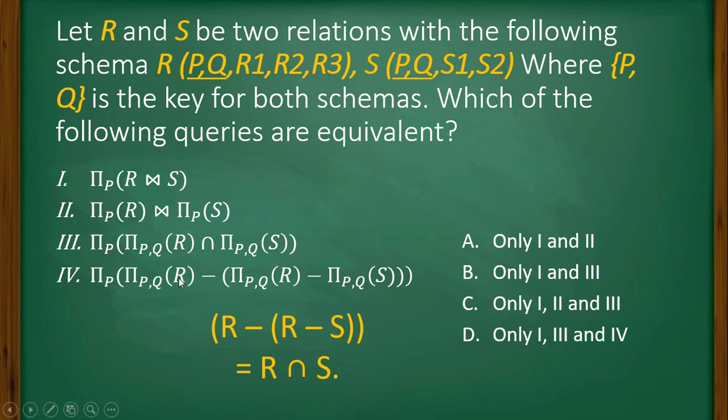So this looks like R minus, in bracket, R minus S. Now as per rule, this is equivalent to R intersection S. That means it will become equivalent to this. That means third and fourth queries are equivalent, and previously I've seen that first and third are equivalent. So you can see that D is the answer: 1, 3, and 4 are equivalent.